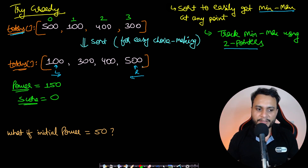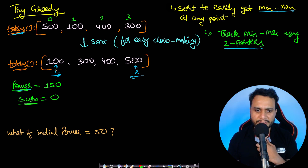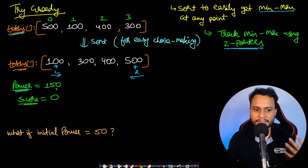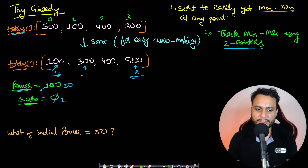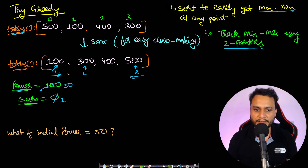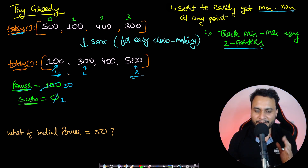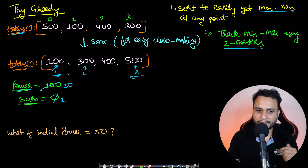Let's walk through the example: initial power 150, score 0, sorted tokens. Compare with the left (minimum) value. As long as we can increase score and decrease power, we keep doing that greedily. It's possible here: score becomes 1, power becomes 50 (subtracting token value 100), and we move the left pointer right. We compare with the minimum unused token because we want to spend the least power.